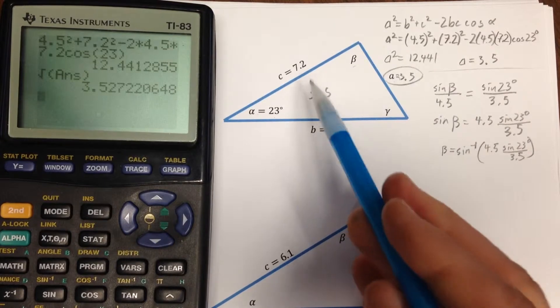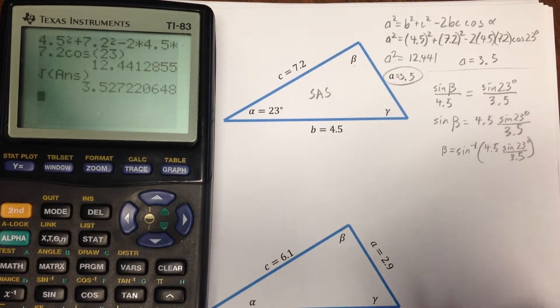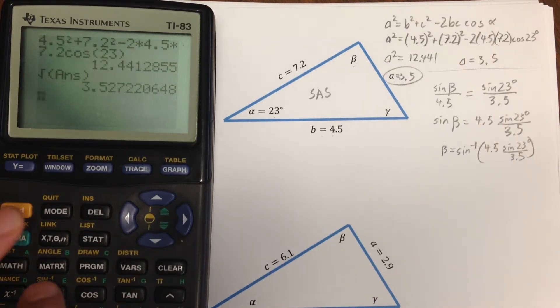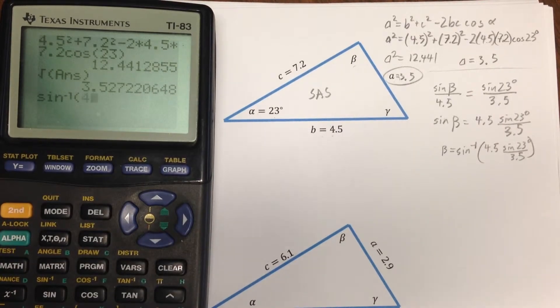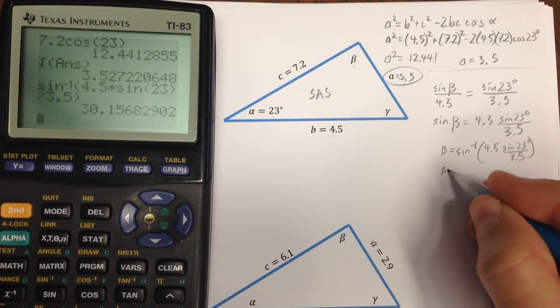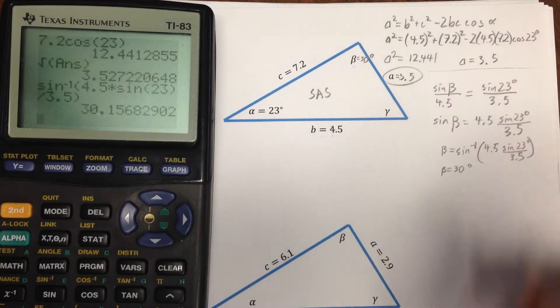Now, the reason I didn't choose the largest side length and the largest angle is, sine inverse maxes out at 90 degrees. So, by choosing one that isn't the largest, it can't be bigger than 90 degrees. So, let's see, I'll take sine inverse of 4.5 times sine of 23 divided by 3.5, which gives me a beta of about 30 degrees.